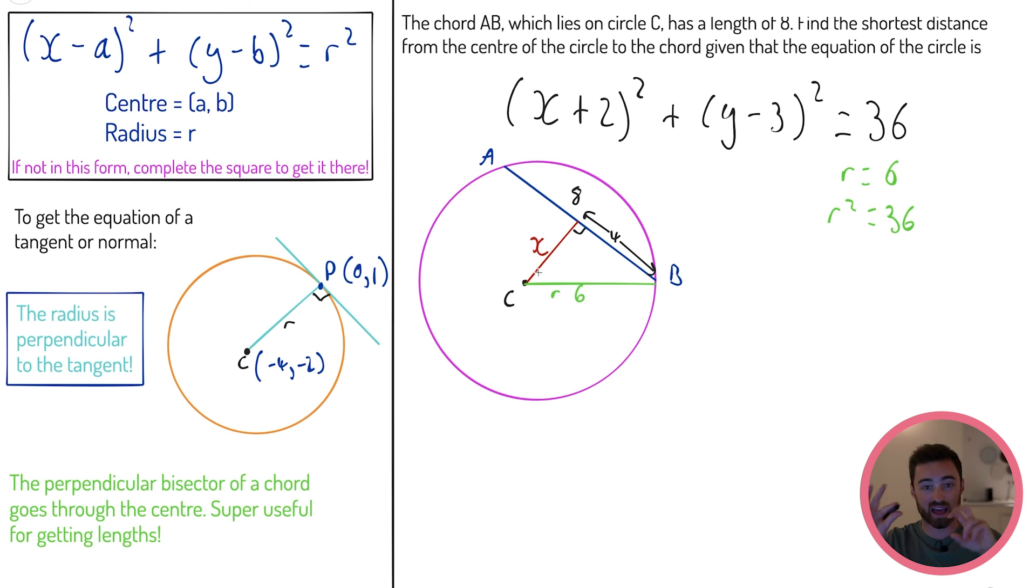So if this is 6, I am absolutely laughing. Let's call this x. What would I have if I Pythagoras-ified this? I would have x² + 4² = 6². So x² = 36 - 16 = 20, giving you x = √20. And we are absolutely sorted. That is it for circles. See you in the next one.